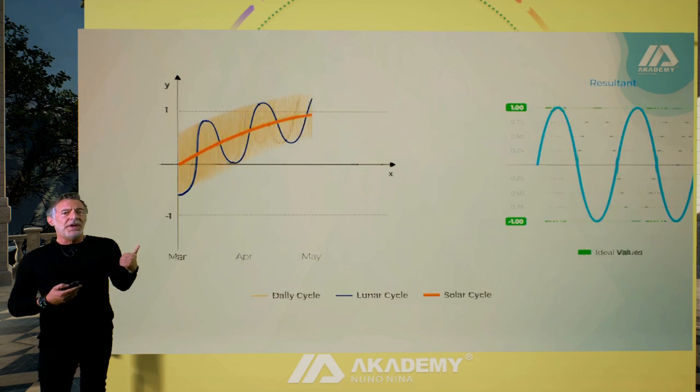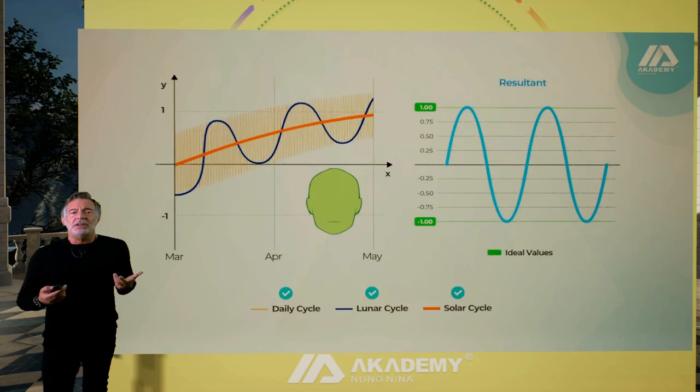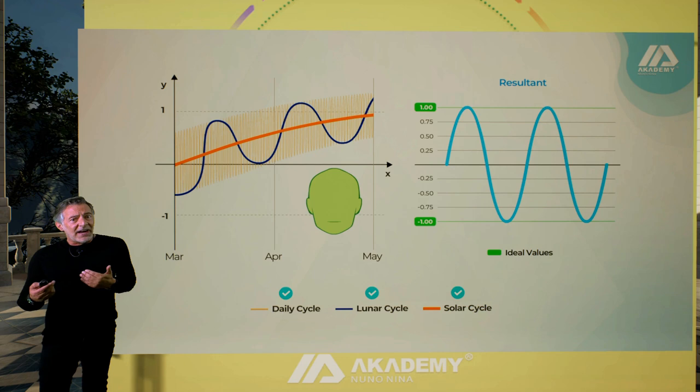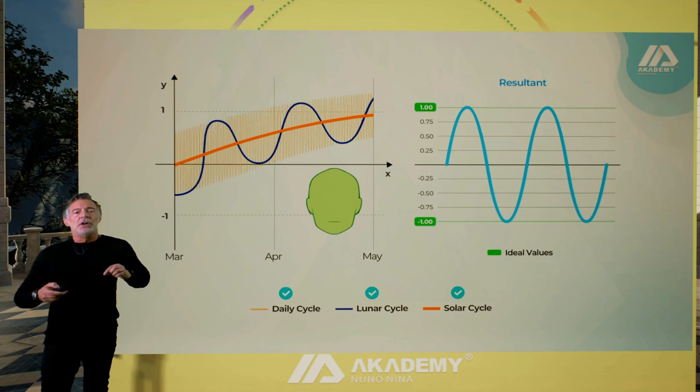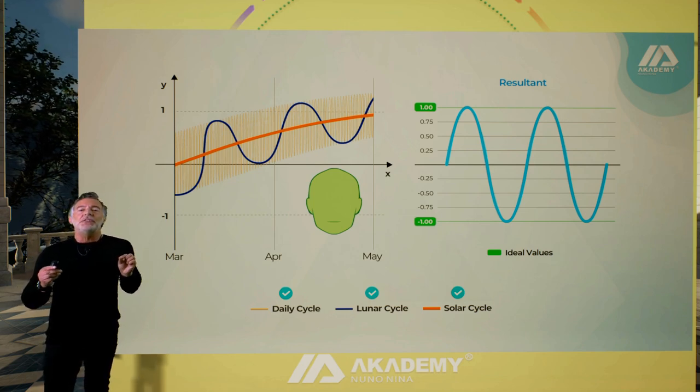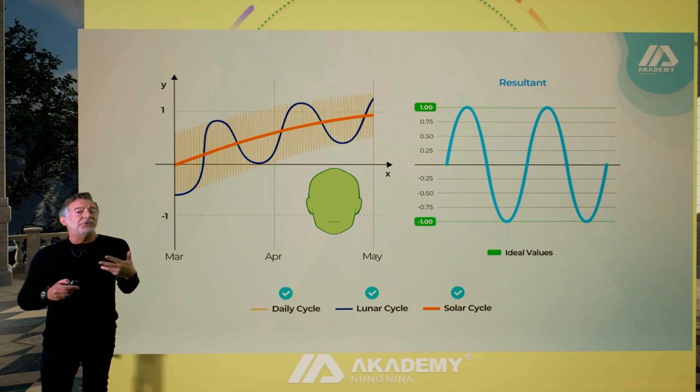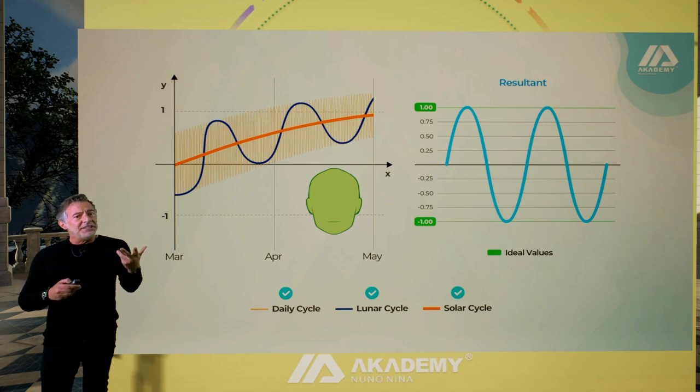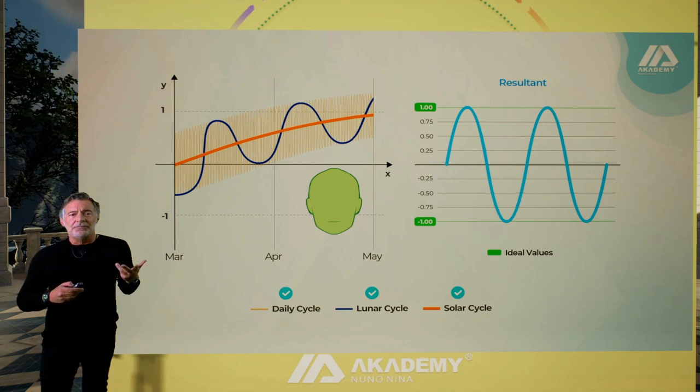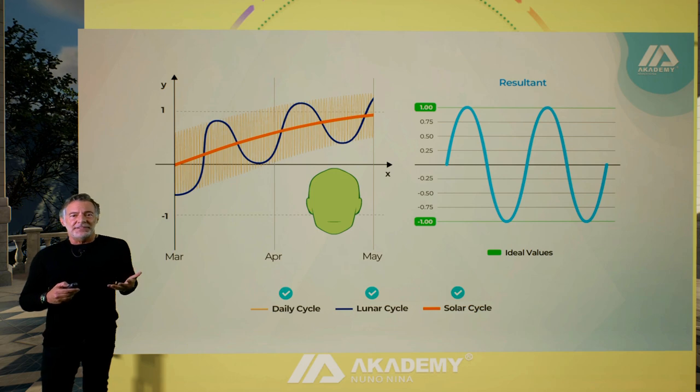On the left side, we have our three natural cycles. And on the right side, we have the resultant from the sum of these three waves. As we remember, we define the ideal redox interval from minus one to one. That will be the hypothetical value of ideal electric current for life. As you can see, the resultant is between those values.